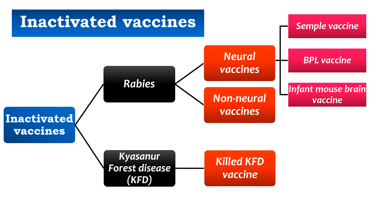Neural vaccines are encephalitogenic and poorly immunogenic, and they are associated with neurological complications. They are no longer in use since the year 2004 and have been replaced completely with non-neural vaccines.